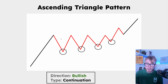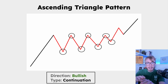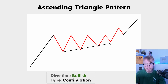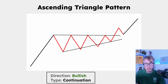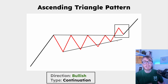We also want to see the highs of the pattern to be around the same level. These highs don't have to be exactly at the same level, but they should be around the same level. What we do here is draw an upward sloping line connecting the lows and a horizontal line connecting the highs.